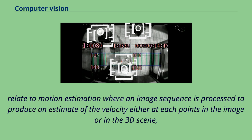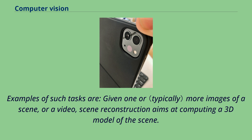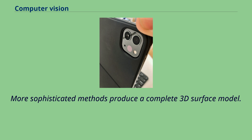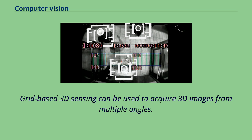Given one or more images of a scene or a video, scene reconstruction aims at computing a 3D model of the scene. In the simplest case the model can be a set of 3D points; more sophisticated methods produce a complete 3D surface model. The advent of 3D imaging not requiring motion or scanning, and related processing algorithms, is enabling rapid advances in this field. Grid-based 3D sensing can be used to acquire 3D images from multiple angles, and algorithms are now available to stitch multiple 3D images together into point clouds and 3D models.